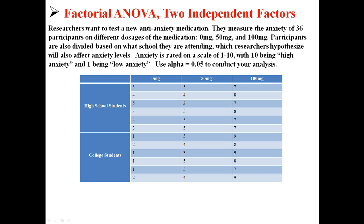Here is an example. Researchers want to test a new anti-anxiety medication. They measure the anxiety of 36 participants on different dosages of the medication: 0, 50, and 100 mg. Participants are also divided based on what school they are attending, either high school or college. Anxiety is rated on a scale of 1 to 10, where 10 is high and 1 is low. Use alpha 0.05 to conduct this factorial ANOVA.